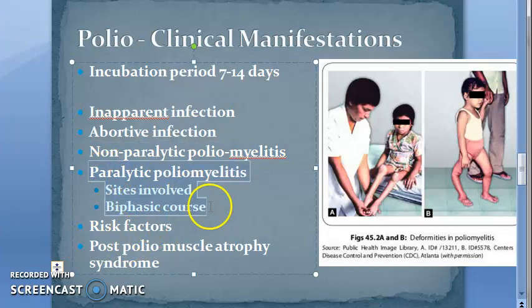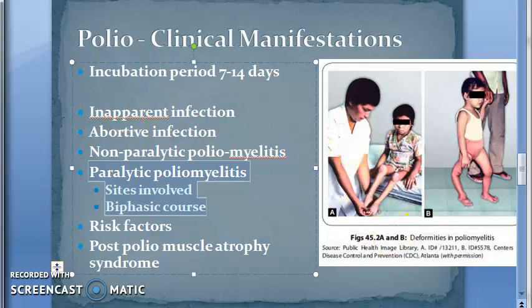Then you have paralytic poliomyelitis. This is the important one. Paralytic poliomyelitis is actually very uncommon — less than 1%. However, this is what is so scary, even though it is the least common of all the clinical manifestations.